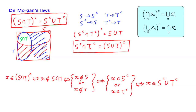We will have many occasions to use De Morgan's laws. They are actually very useful, as they allow us, in general, to go back and forth between unions and intersections.